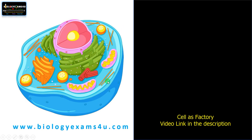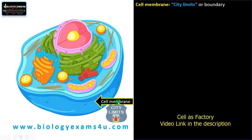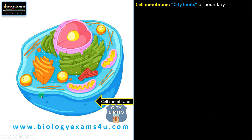In the case of an animal cell, the outermost boundary is the cell membrane. Cell membrane can be compared to the city limits which are guarded by officials that regulate entry and exit into the city. Just like that, a cell membrane is a selectively permeable membrane with a phospholipid bilayer and proteins that regulates the movement of molecules to and from the cell. It maintains the internal environment of the cell.